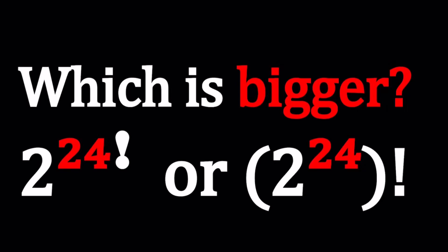Hello everyone. In this video, we're going to be comparing two very big numbers and find out which one is bigger. We have 2 to the power 24 factorial, and 2 to the power 24 factorial. In the second number, 2 to the power 24 is inside the parentheses, so we evaluate that first and then do the factorial. With the first number, we evaluate 24 factorial first, and that becomes the power of 2. Let's see how we can compare these two numbers.